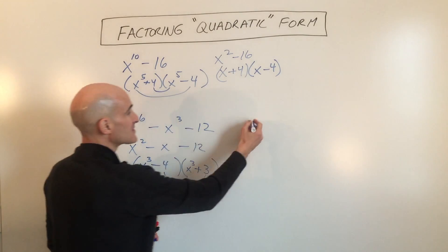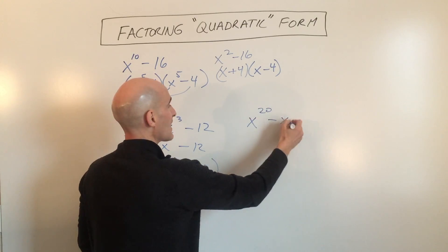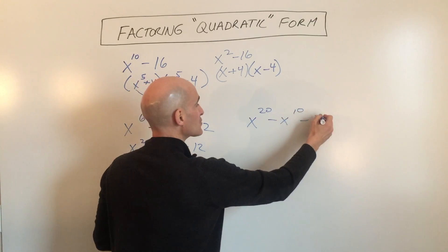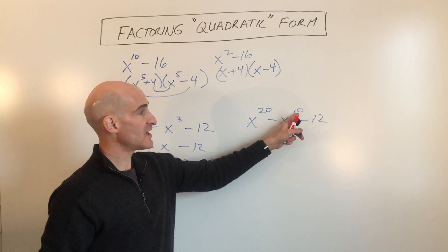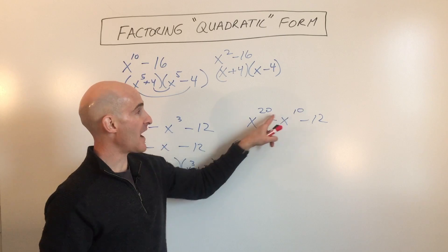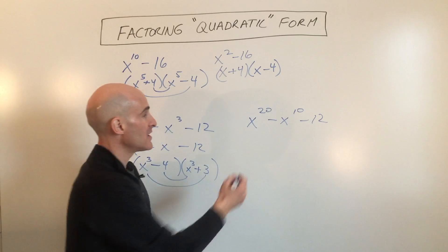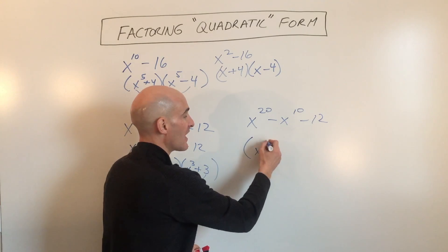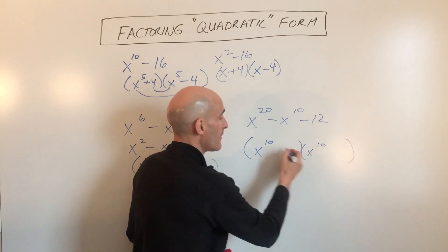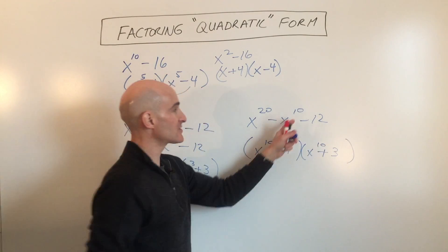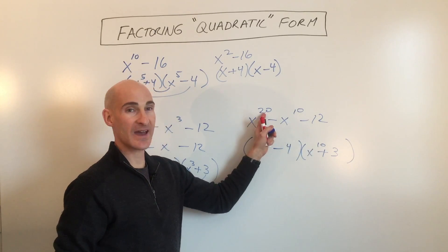Now, if we were to make a similar problem, like let's say this is x to the 20th minus x to the 10th minus 12, one way to recognize this quadratic form is you see how this middle exponent is half of the leading exponent. So you're going to factor it the same way. It's going to be x to the 10th minus 4 plus 3. So it's always going to be this middle exponent that's here and here. So when you multiply, you add to get 20.